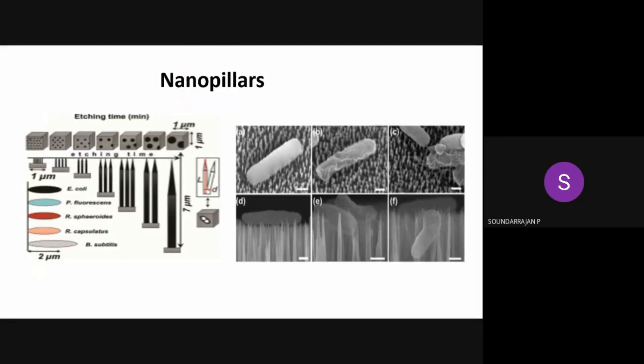The image on the right is an electron microscopic image of the interaction between the bacteria and the nanopillars. As you can see from the images E and F, the bacteria comes in contact with the nanopillars which penetrates the bacterial cell wall and kills the bacteria.